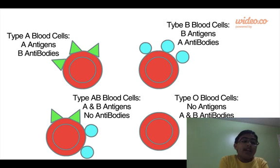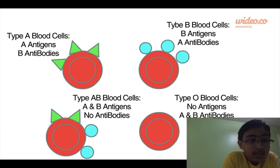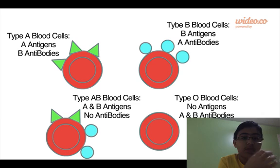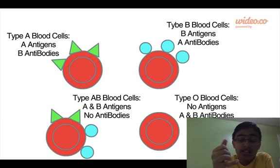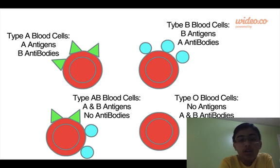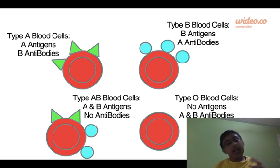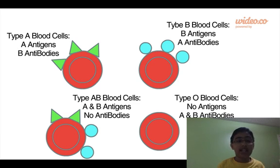Type A has A antigens and B antibodies, so A cannot receive any blood from someone that's a B. And B has B antigens and A antibodies, so a person in the B blood group cannot get a donation of blood from someone that has A.